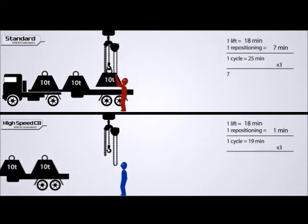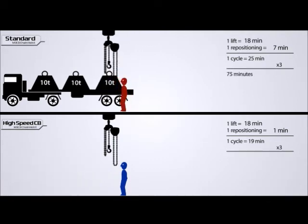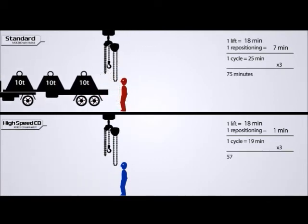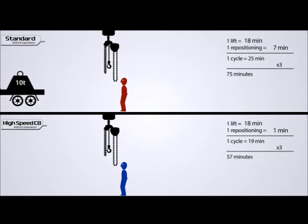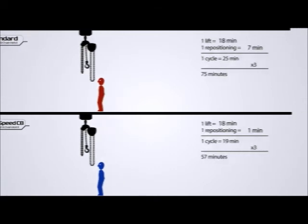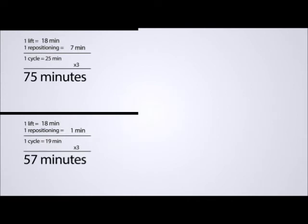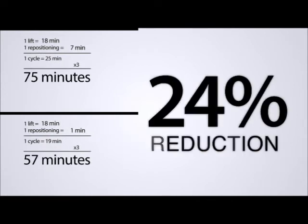It took the red operator 75 minutes to complete three cycles, yet it took the blue operator only 57 minutes to finish the same job. This example shows how using a high-speed CB hoist can translate into a significant 24% reduction in man hours and related costs.